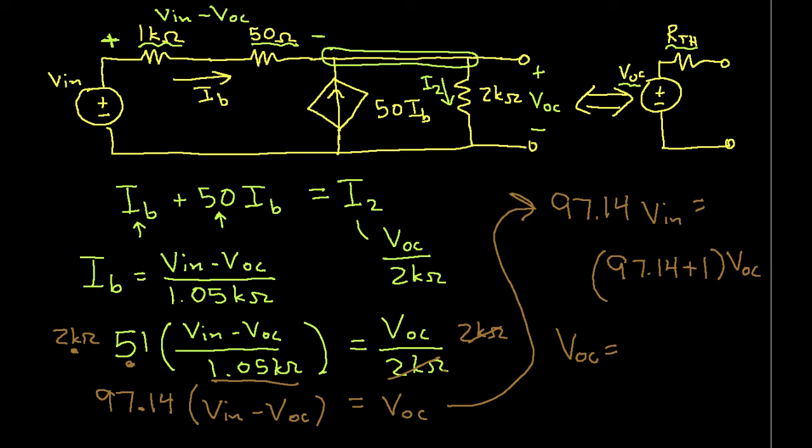Which, when I work it out, is equal to 0.990 VN. So now we have VOC in terms of VN. And in a sense, we are halfway done.